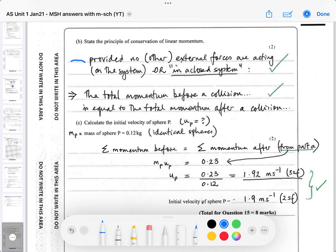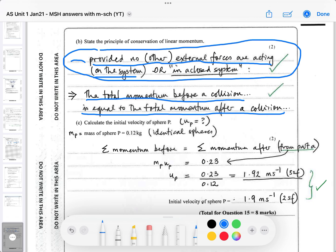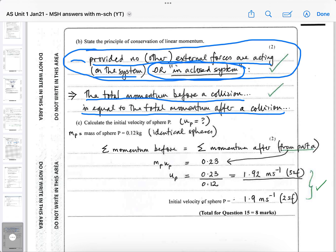It says state the principle of conservation of linear momentum. And this is what you should always say. The first line is important. It says provided no other external forces are acting on the system, then the total momentum before a collision is equal to the total momentum after a collision. And the first bit is something you just got to learn as the accurate way of doing it. Because obviously if other forces were involved, it means we haven't taken everything into account. And this is called a closed system. So the principle conservation of momentum applies in a closed system where you're only looking at those objects. No other forces come into effect.